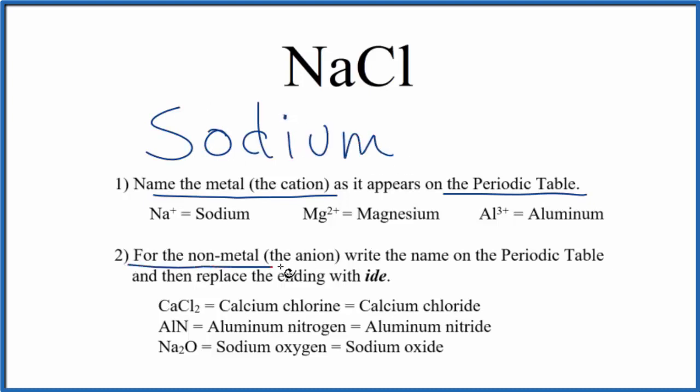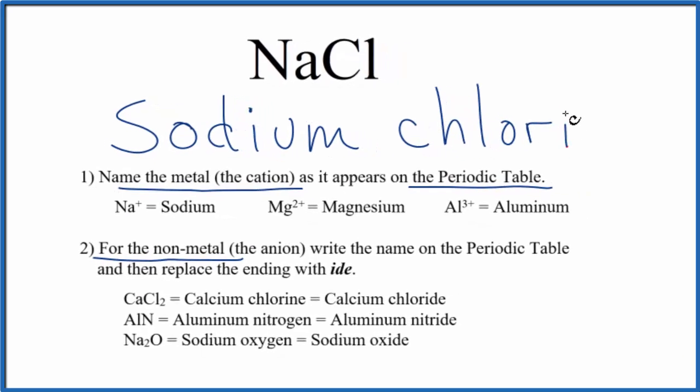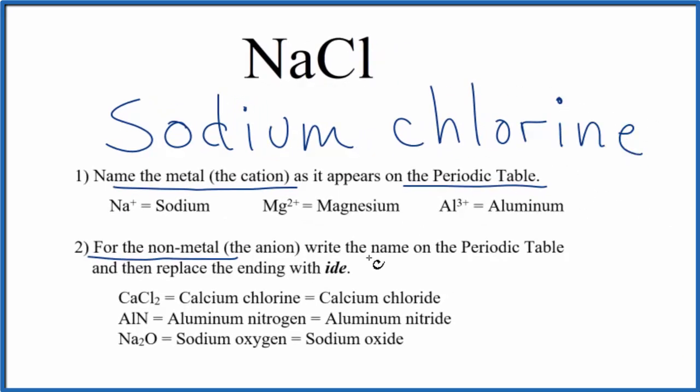Then we write the name for the nonmetal. So we write chlorine with a small c. And once we have that, we replace the ending with I-D-E. So we cross this out and write I-D-E. So the name for NaCl is sodium chloride.